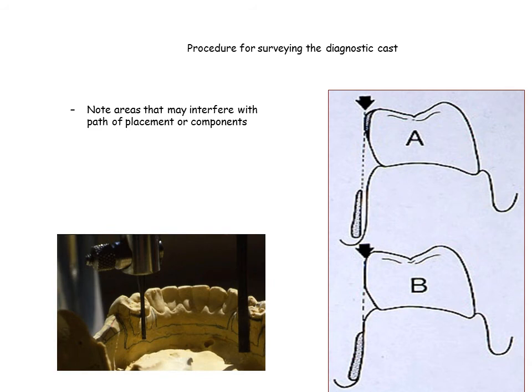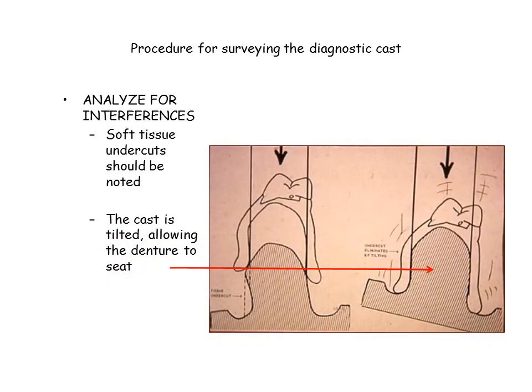If a mandibular cast is being surveyed, check the lingual surfaces that will be crossed by a lingual bar major connector during placement and removal. Bony prominences and lingually inclined premolar teeth are the most common causes of interference to a lingual bar connector. Interference to major connectors rarely exists in the maxillary arch. 52. Areas of interference are usually found on buccally inclined posterior teeth and those bony areas on the buccal aspect of edentulous spaces. As with the mandibular cast, the decision must be made whether to eliminate them, change the path of placement at the expense of guiding planes and retention, or design the connectors and bases to avoid them.